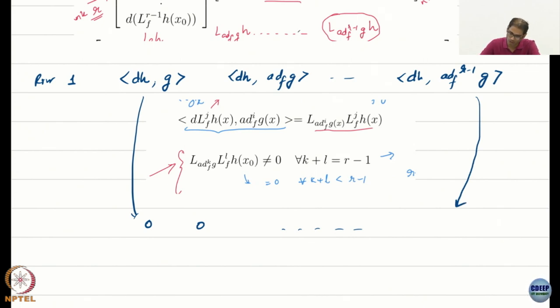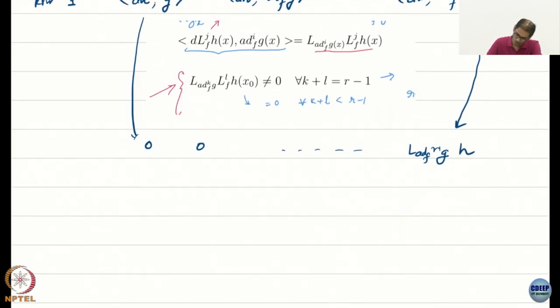Let us look at the last term. What is the j here? 0, right? Because I did not change the first term at all. j is 0. j remains fixed. i is? r minus 1. What is the sum? r minus 1. Non-zero. So I am going to say this is just whatever. I am going to write it as L_add_f^(r-1) g h.